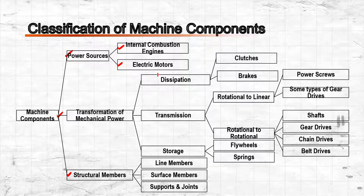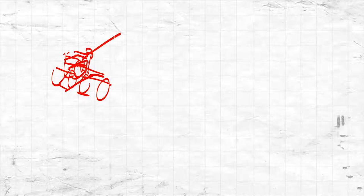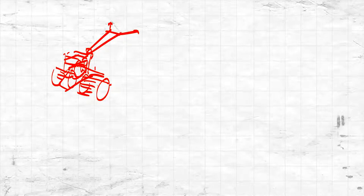The choice of power source depends on the application. For field operations, since there is no electrical power supply, the power source for tractors and hand tractors is internal combustion engines. For processing equipment such as a bucket elevator, electric motors are the most common power source.